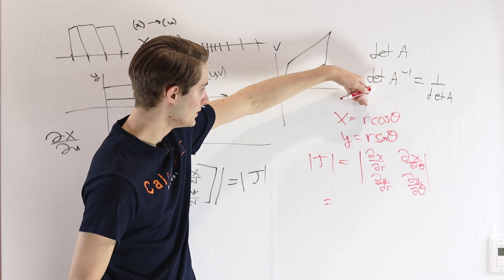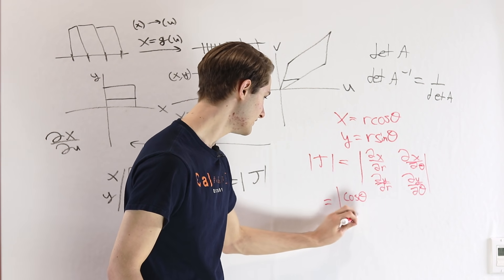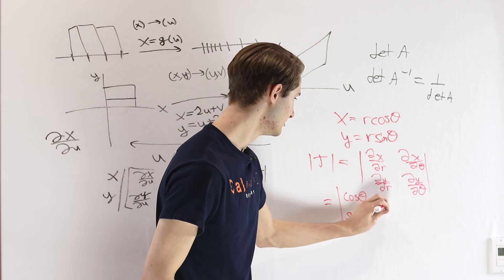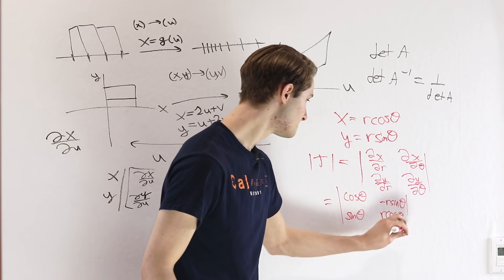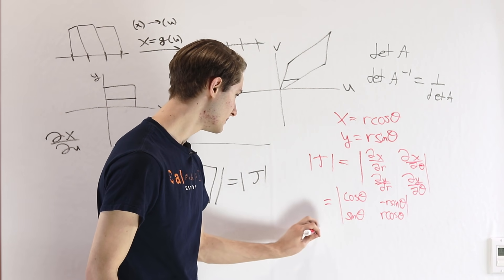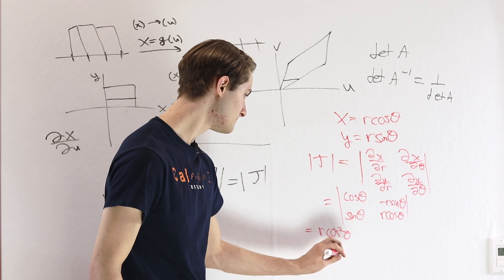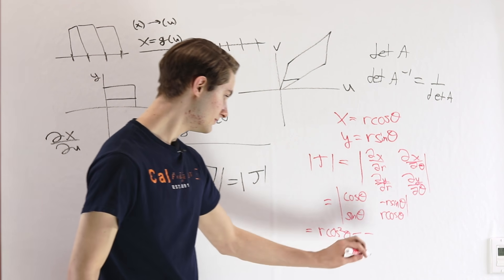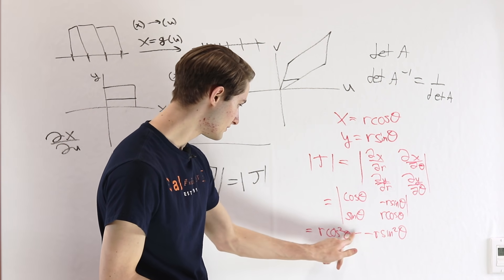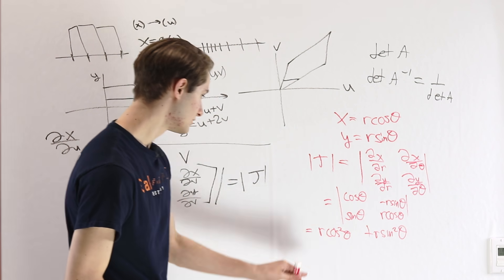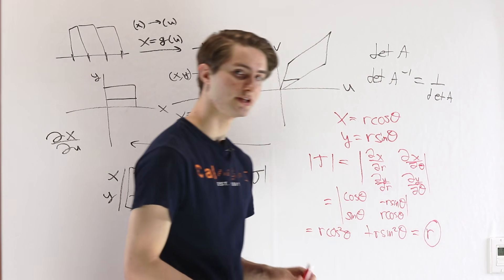Multiplying this out, we get cosine theta times r cosine theta, which is r cosine squared theta, and then minus a negative r sine squared theta — so a minus and a minus becomes a plus. We have r times (cosine squared theta plus sine squared theta), which is just r. So r is the Jacobian determinant for this polar coordinate substitution of variables.